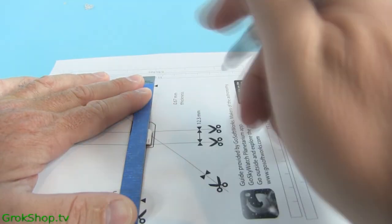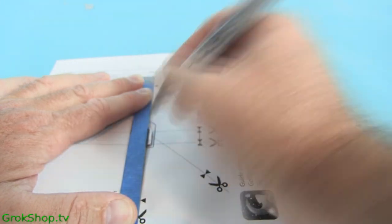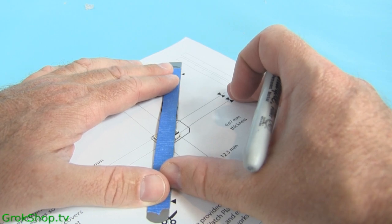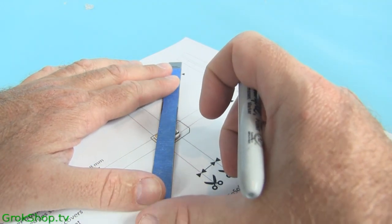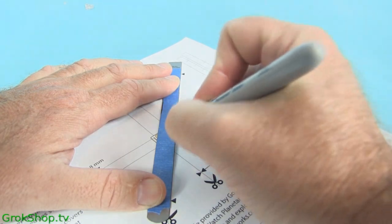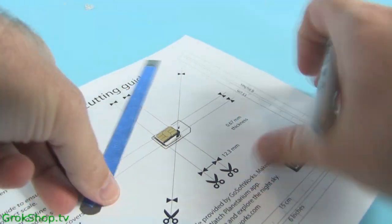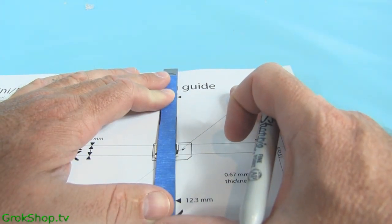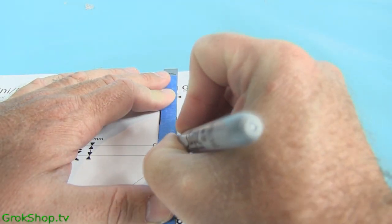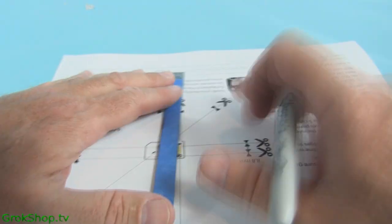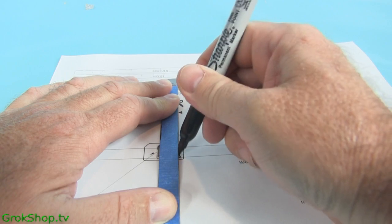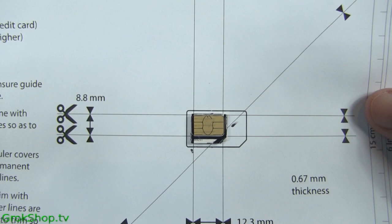So basically you'll be cutting away the areas that are marked with the Sharpie. It should look kind of like this when you're done.